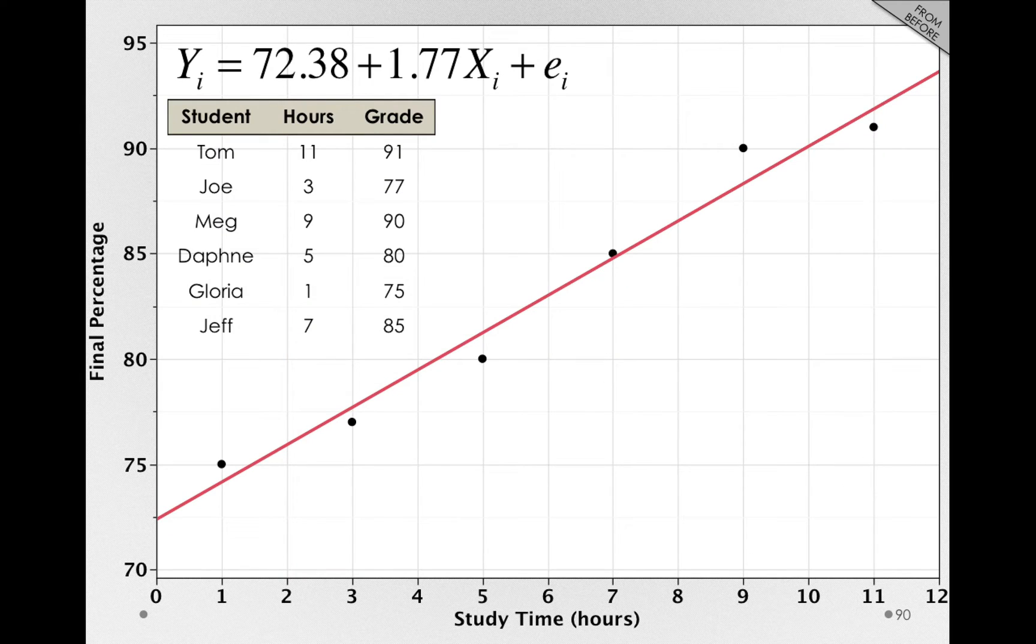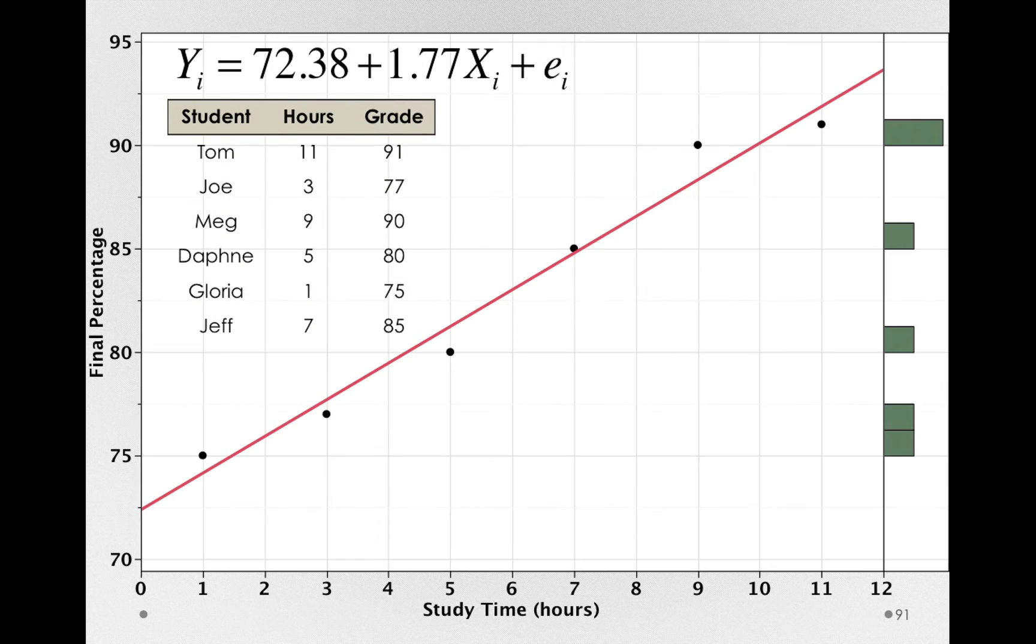So here is our sample data, and let's actually add in a little bit on the side, which is the variability in the y-axis. Now I want you to notice that this is what we're seeking to explain with our model. That is, there are differences among people in the final exam score, and we want to, on the basis of our model, try to explain those differences.